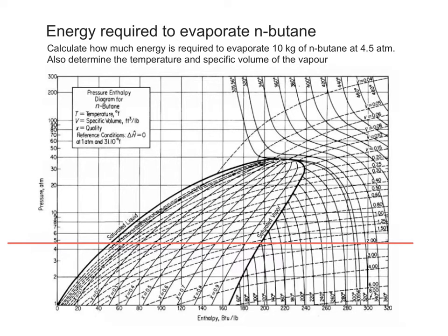So if we draw a line going through 4.5 atmospheres, we are interested in this point and this point, and so we can read off the enthalpy of a saturated liquid over here and the enthalpy of a saturated vapor over here. So this distance is effectively the heat of evaporation of the n-butane at this pressure.